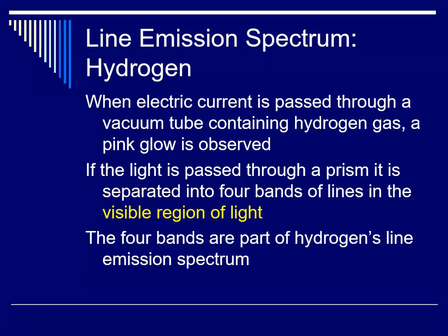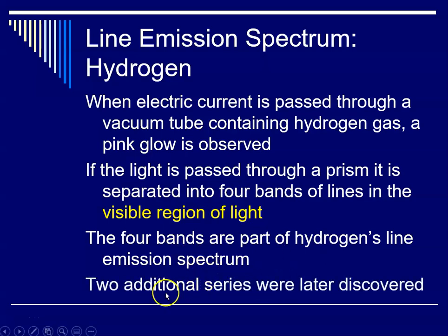And during this time frame when atomic theory was being advanced, people were trying to understand what was going on with hydrogen and why there were these lines. And later on, two additional series of lines were discovered in the ultraviolet and infrared regions of the electromagnetic spectrum.